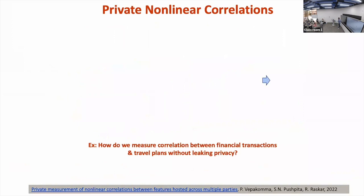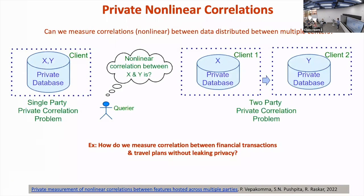Now, other connections between distributed and private computation. One problem potentially interesting in the data market or data valuation world, even before mechanism design, is estimating correlations in the two-party setting — just point estimates of reasonably known estimators, but in a private setting. This is typically hard: for an inner product where X is with one party and Y is with the other, results by Steinke and Ullman on the limits of two-party differential privacy show that adding noise on both sides gives a very bad utility-privacy trade-off.